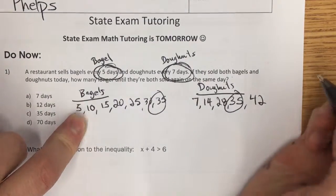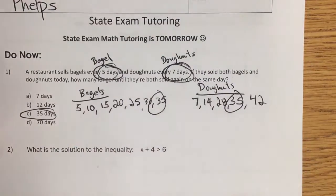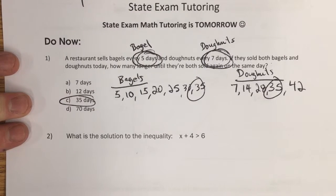Oh, they share that. So 35 days, they'll sell both. Answer choice is C, 35 days.